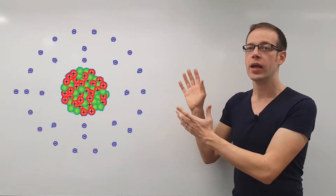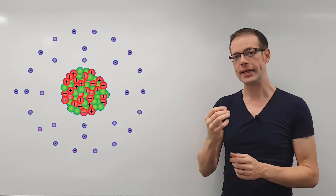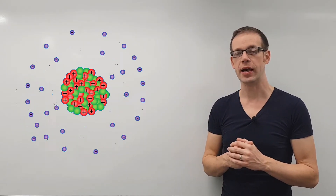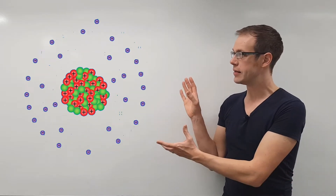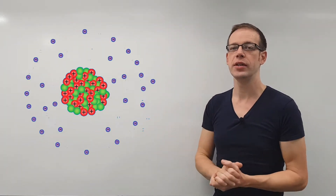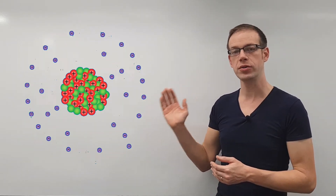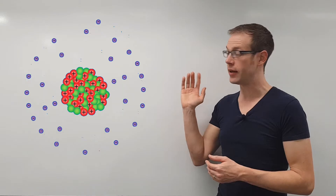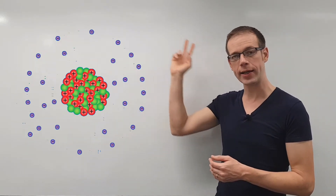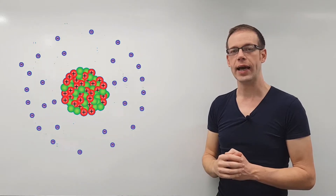We're going to look at this atom. This atom that we've got on the screen here is one that's very dear to the heart of electricians — it's a material that we use all the time. This is an atom of copper. You'll notice on this copper atom that there are 29 protons, 29 neutrons, and really importantly 29 electrons all whizzing around the outside of the atom.